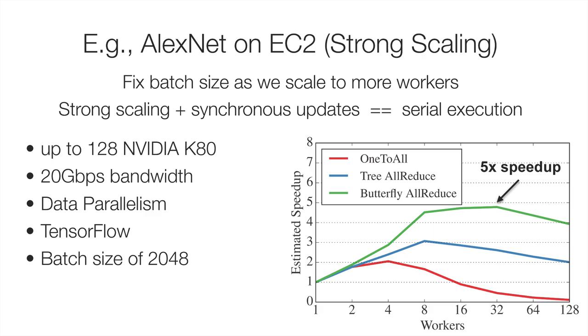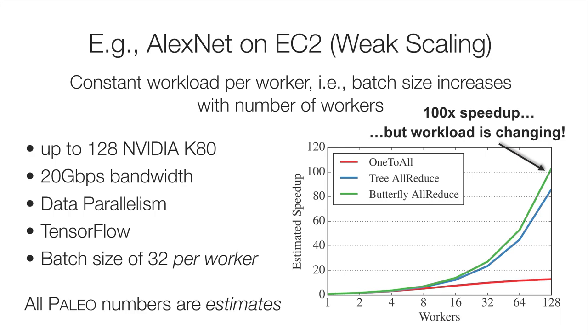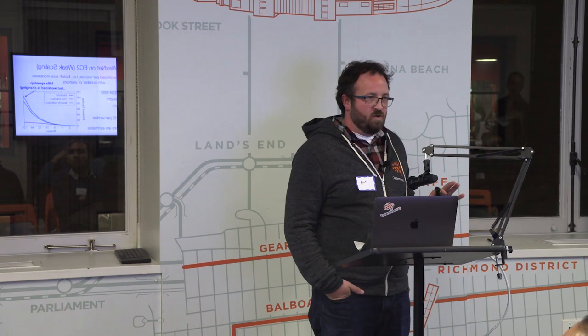What happens with weak scaling? We eliminate the fixed batch size constraint — instead fix a constant workload per worker (32 examples per worker) and increase the number of workers linearly. Scaling up to 128 K80s, we get pretty close to linear speedups. But I want to stress that the workload is changing — the thing running on the right side of the curve is not the same as the left side. Empirically, only the models in the lower-left corner (small worker count) are going to actually converge to useful answers. These are estimates of what a system like this would perform.